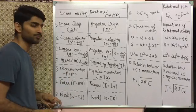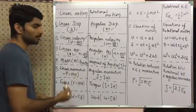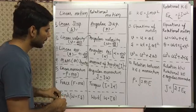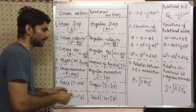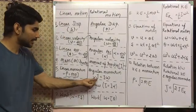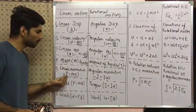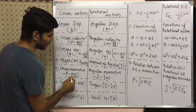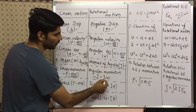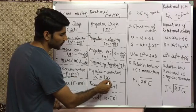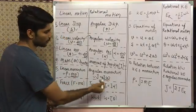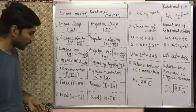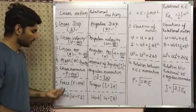The fifth point is linear momentum, denoted by capital 'P', given by P = m × v. In rotational motion we have angular momentum, denoted by 'J'. Just as linear momentum is the product of mass and velocity, angular momentum converts mass into moment of inertia and velocity into angular velocity, so J = I × ω.